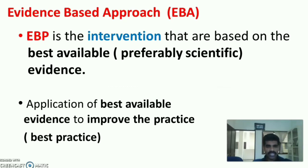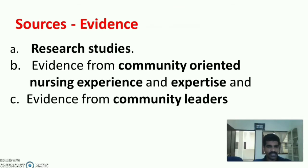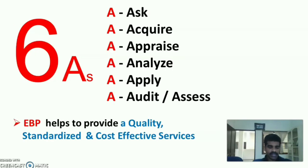The next approach is evidence-based approach (EBA). It involves interventions based on the best available scientific evidence to improve practice and make best practices in the community. Sources of evidence include research studies, community-oriented nursing experience and expertise, and evidence from community leaders. The six A's of evidence-based practice are: ask, acquire, appraise, analyze, apply, and audit or assess.